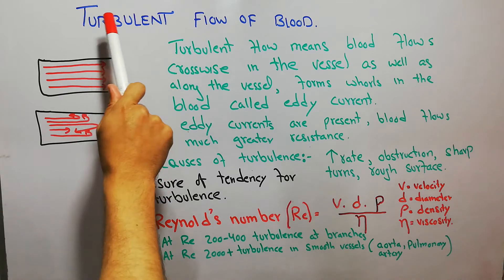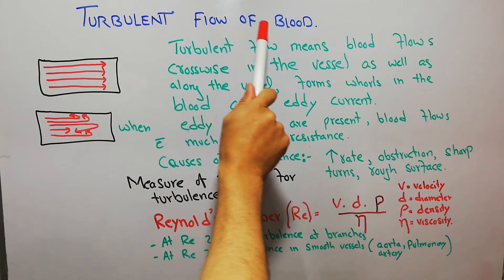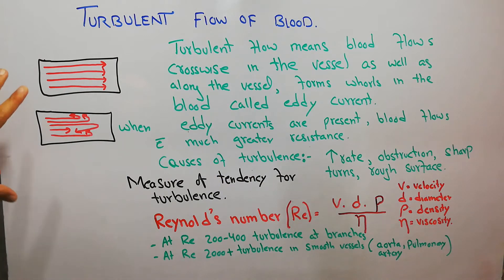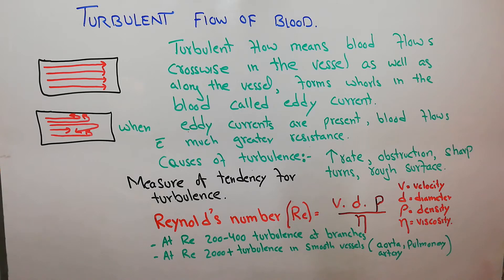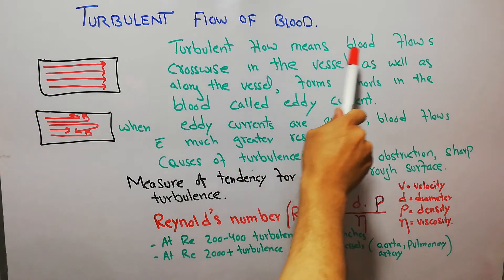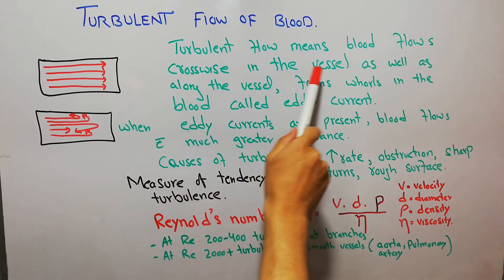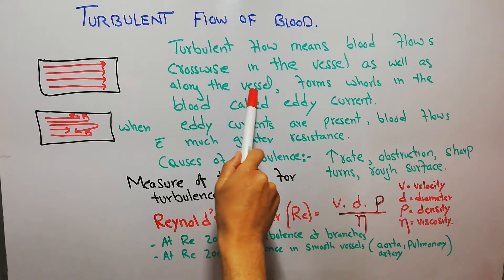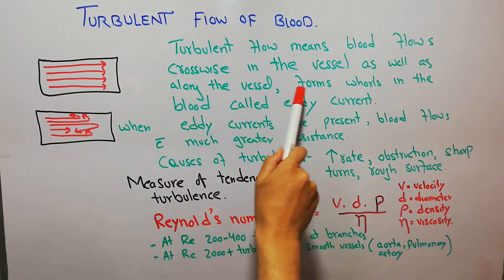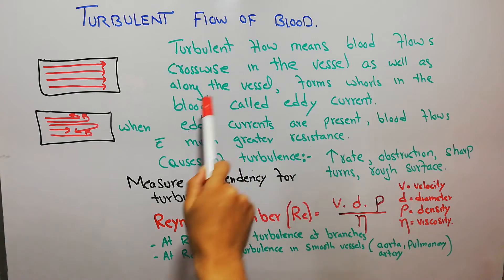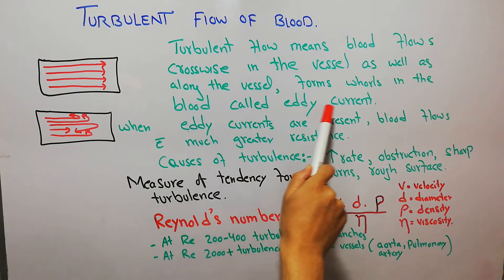Today we are going to discuss the turbulent flow of blood. We have already discussed laminar flow of blood, and now we are going to discuss turbulent flow. Turbulent flow means blood flows crosswise in the vessel as well as along the vessel, forming whirls in the blood called eddy currents.